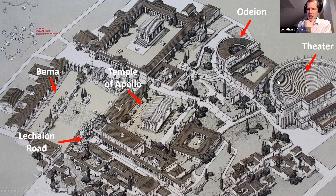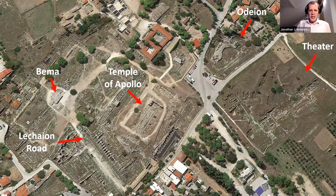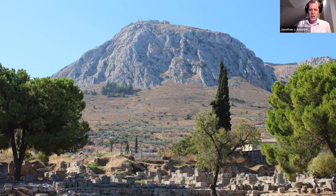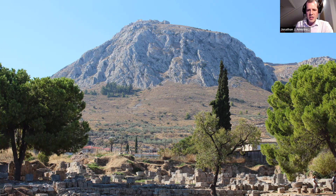We're going to jump into the city and start looking at photographs of what it looks like as we visit it today. The first place I want to take you to is the Acro-Corinth. Here it is — this is what it looks like. I've had the privilege of being to the ancient site of Corinth several times, maybe three times. On one occasion I took the luxury of walking all the way from the archaeological area up to the top — it took about three hours to get there.